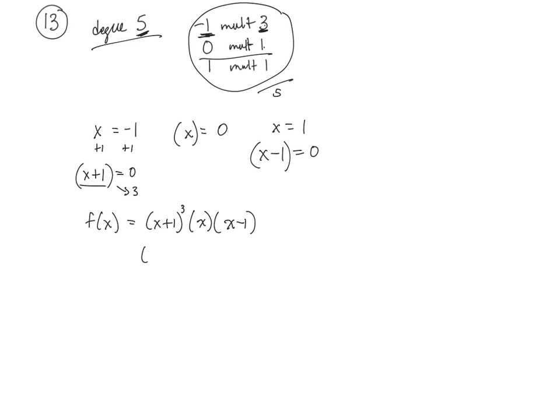And I guess you could take this and write out 3 x plus 1s, and an x, and an x minus 1, and then foil this together, and then what you get from this, foil it with the next one. But I don't think they'll expect you to do that. You can write it just like that.